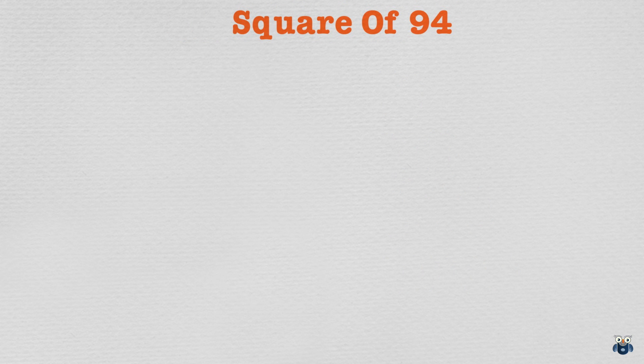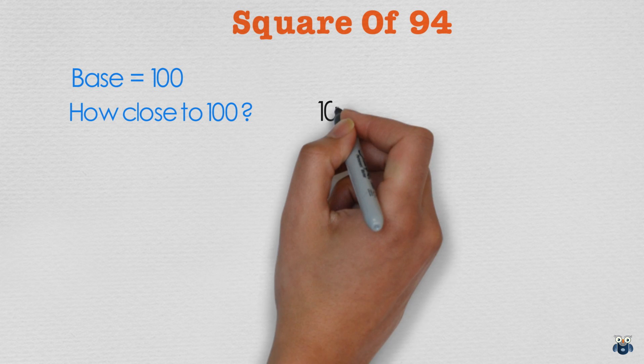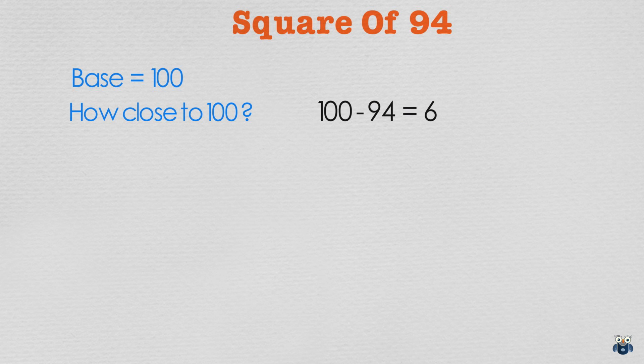What is the square of 94? As you can see 94 is close to 100 which we will call our base number. The first question you need to ask is how close? 94 is 6 less than 100. Now we do two things.